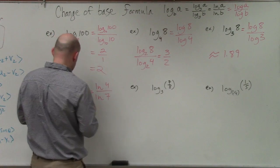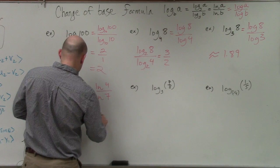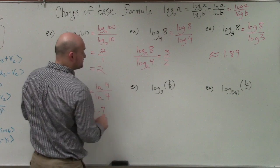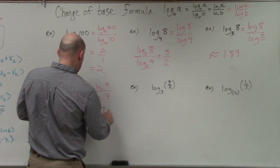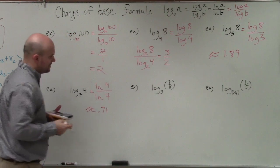But I'll just do ln of 4 divided by the ln of 7. And in this case, I get approximately 0.71 when I round to my nearest hundredth.